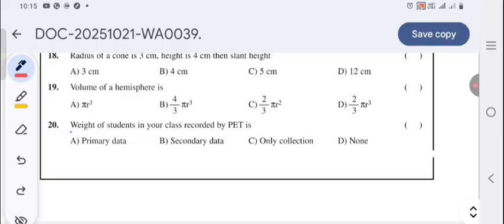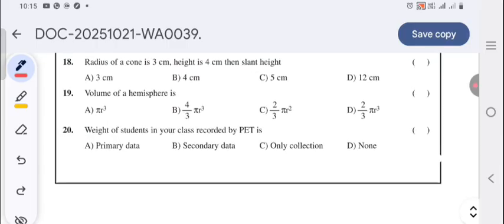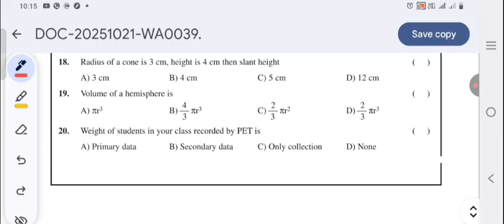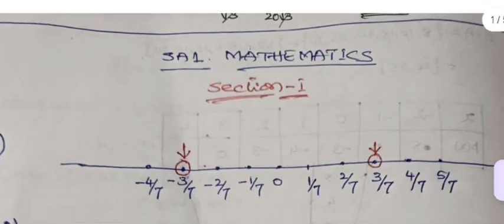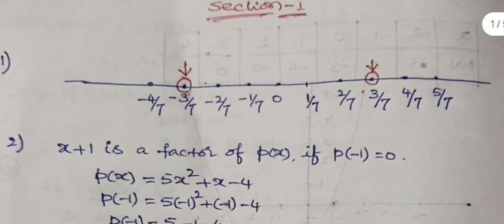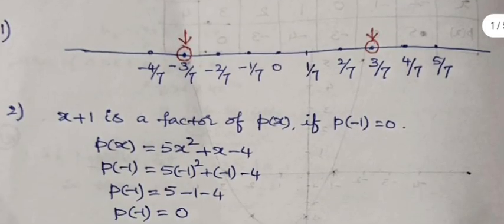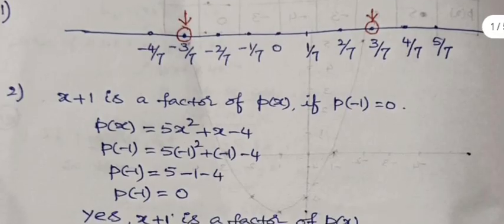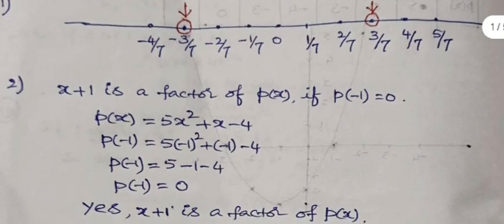This is the end of the question paper. Now continue looking at the answers. These are the answers given here. For the first question, you have to identify or locate 3/7 and -3/7 on the number line. Clearly here it is done.